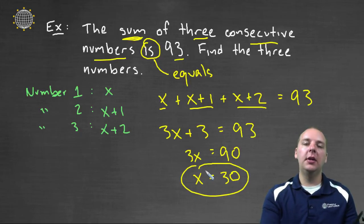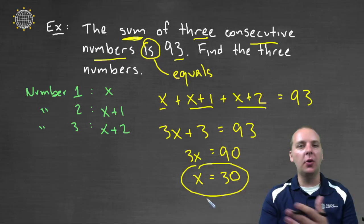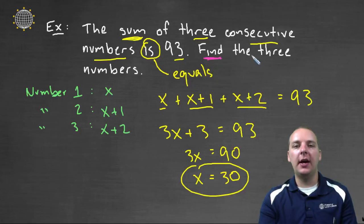So now here's something else we need to mention. We get x equals thirty and we say, okay there's an answer, I guess we'll go to the next problem now. But in fact that's not the case. So if we look back at the problem, they asked us to find the three numbers, all three numbers. But if you notice, x was just number one.